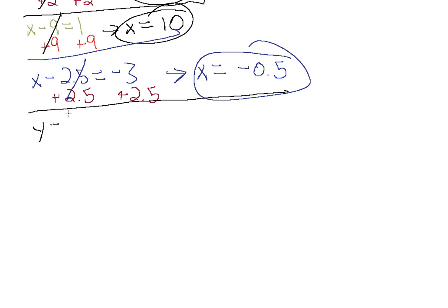Let's say we have y minus 1.5 equals 3/4. We have a couple of rational numbers here — don't get concerned about the different variable. y is just a placeholder. To get rid of this 1.5 and get y by itself, we're going to add 1.5. A plus 1.5 and a minus 1.5 will cancel out. Whatever we do on one side we have to do on the other side, so we add 1.5 on the right side as well. That leaves y on the left side.